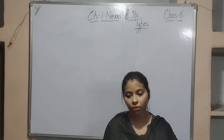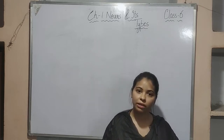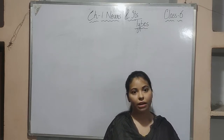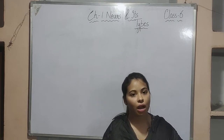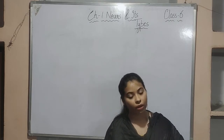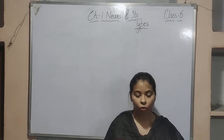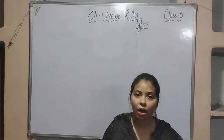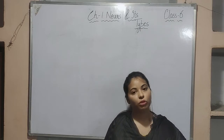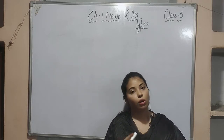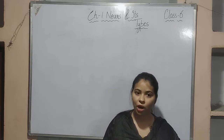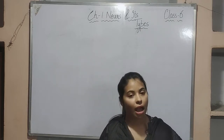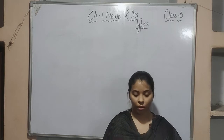Noun is the name of a person, place, animal, or thing. Whatever you see around yourself, that is a noun. The types of nouns are: common noun, proper noun, abstract noun, and collective noun.